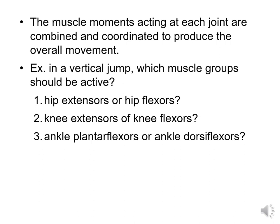Muscle moments — muscular forces acting at each joint — are combined and coordinated to produce overall movement. No movement occurs from just one single muscle. When we looked at running, our hip extensors and flexors move in coordination with each other, as do knee extensors and flexors, and ankle plantar flexors and dorsiflexors. For example, in a vertical jump, which muscle groups are agonists depends on the phase. For the up phase, we want to move upwards, so we need to push against the ground using equal and opposite forces.